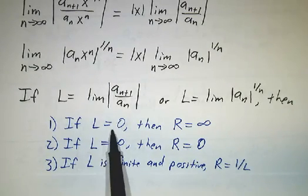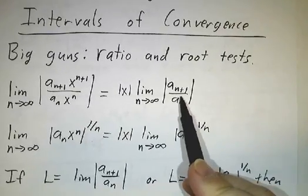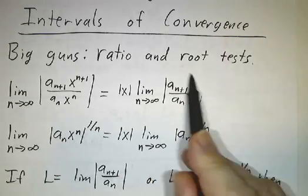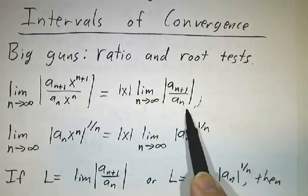If L is zero, then the radius of convergence is infinity. Because if this limit goes to zero, then no matter how big x is, this whole thing goes to zero, and therefore the series converges.